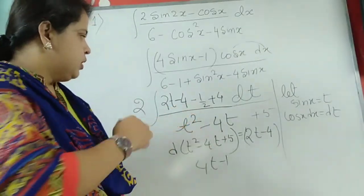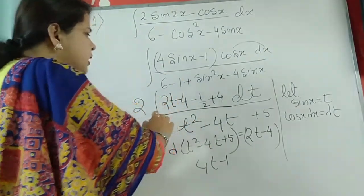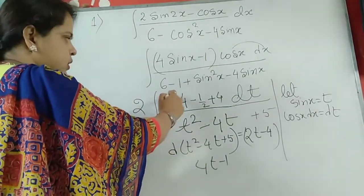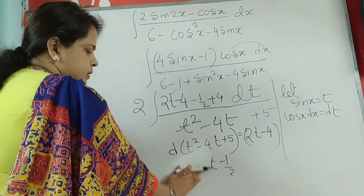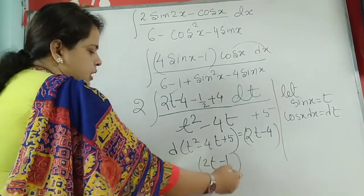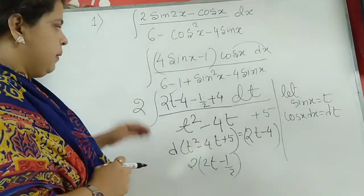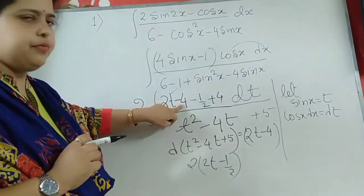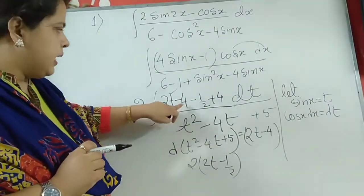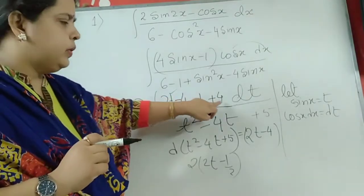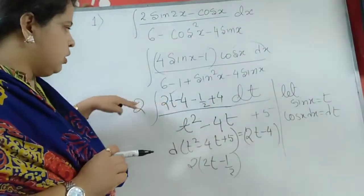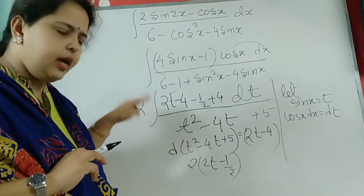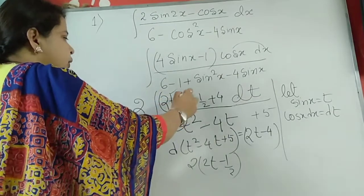When 2 is common, this becomes minus one-half. See: 2t is there because 2 is common. But I need a minus 4, so minus 4 is introduced and then adjusted with a plus 4, so the entire numerator remains the same value.